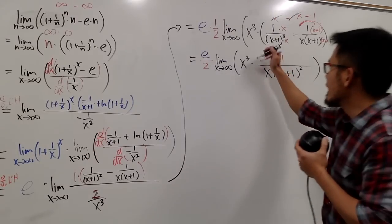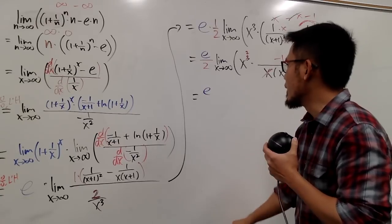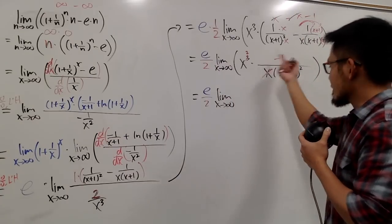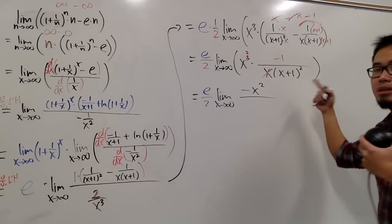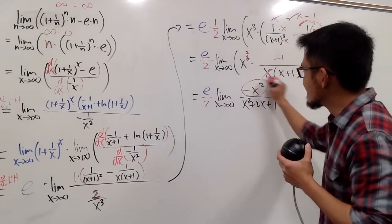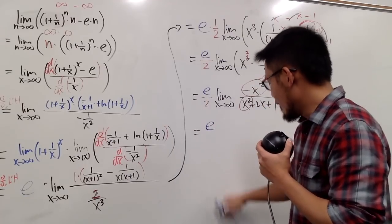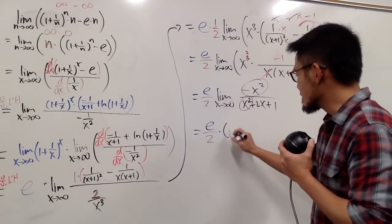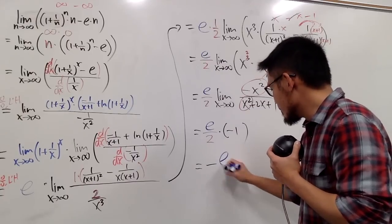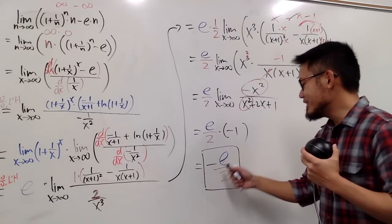So we have e over 2 times the limit as x goes to infinity of negative x squared over x times (x plus 1) squared. Expanding (x plus 1) squared gives x squared plus 2x plus 1. Looking at the leading terms, negative x squared over x squared is just negative 1. So this limit equals negative 1. Multiplying everything together: e over 2 times negative 1 gives negative e over 2. The final answer is negative e over 2.